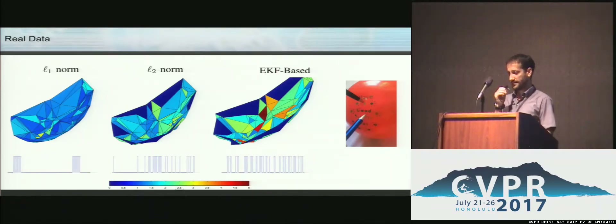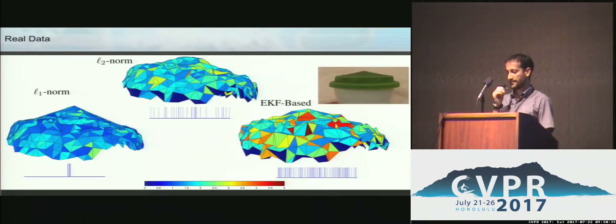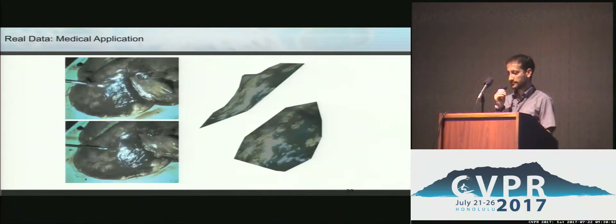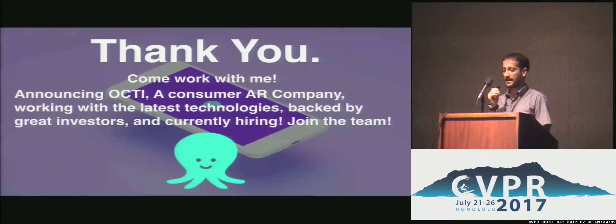We have experimental results on rubber material where we reconstructed two creases, and the support is well recovered. We show a hill deformation on stretchy cloth where the deformation is well localized. We also localize deformations on silicone materials, and this approach can be used to reconstruct 3D shapes on organs for augmented reality applications.